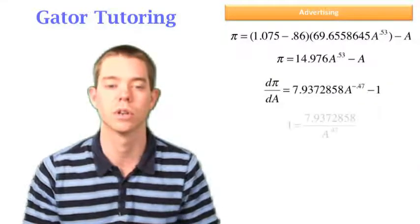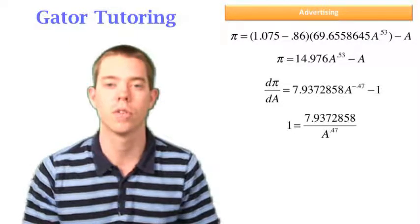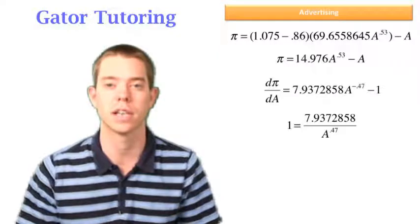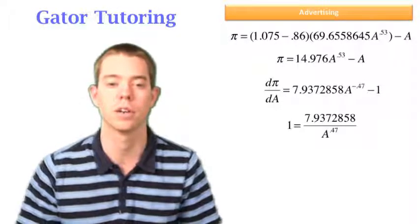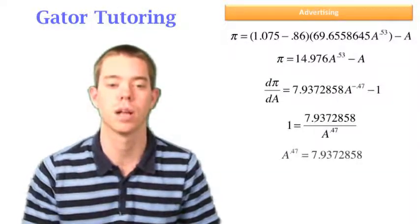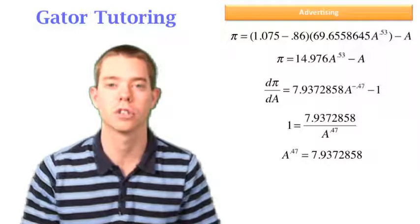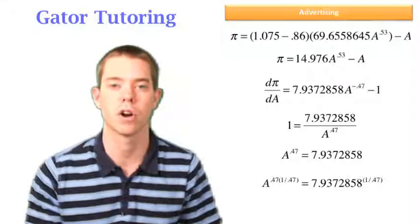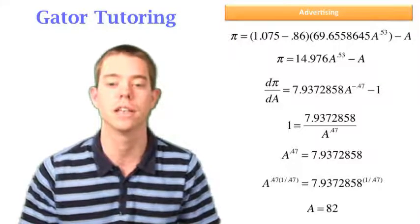We're going to set this equal to zero and we can put one on the other side. We know that a negative exponent in the numerator is the same thing as a positive exponent in the denominator. So now we can cross multiply, raise both sides to the one divided by .47 to solve for A. And in this case, we find that our optimal level of advertising is 82.